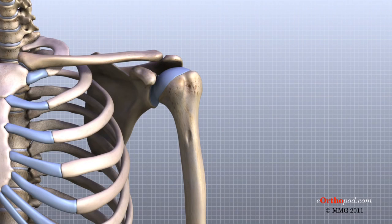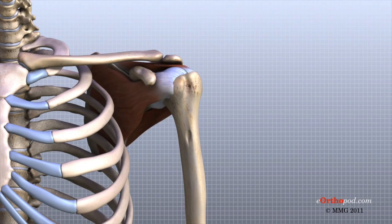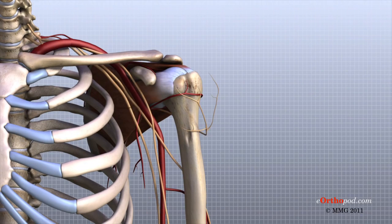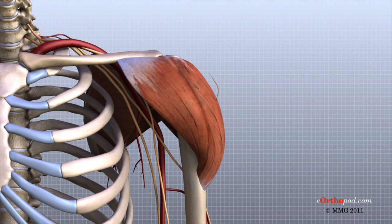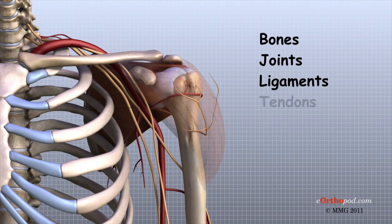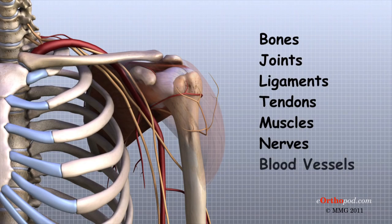Understanding the different parts of the shoulder can help you understand how the shoulder works, how it can be injured, and how challenging recovery can be when the shoulder is injured. The important structures of the shoulder can be divided into several categories. These include bones, joints, ligaments, tendons, muscles, nerves, blood vessels, and bursa.